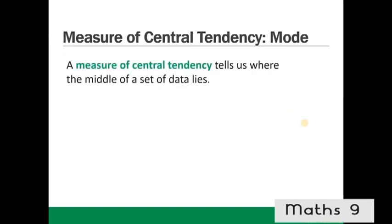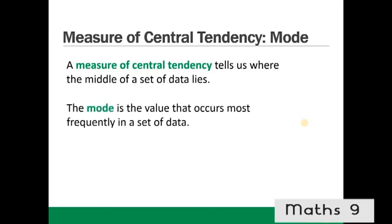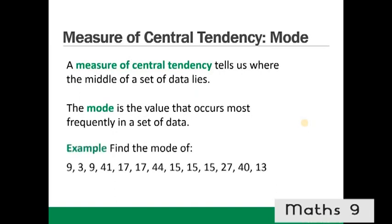Measures of central tendency — mode. A measure of central tendency tells us where the middle of a set of data lies. The mode is the value that occurs most frequently in a set of data. For example, to find the mode of this set we look for the number that occurred most often, which is 15, because it occurs 3 times.